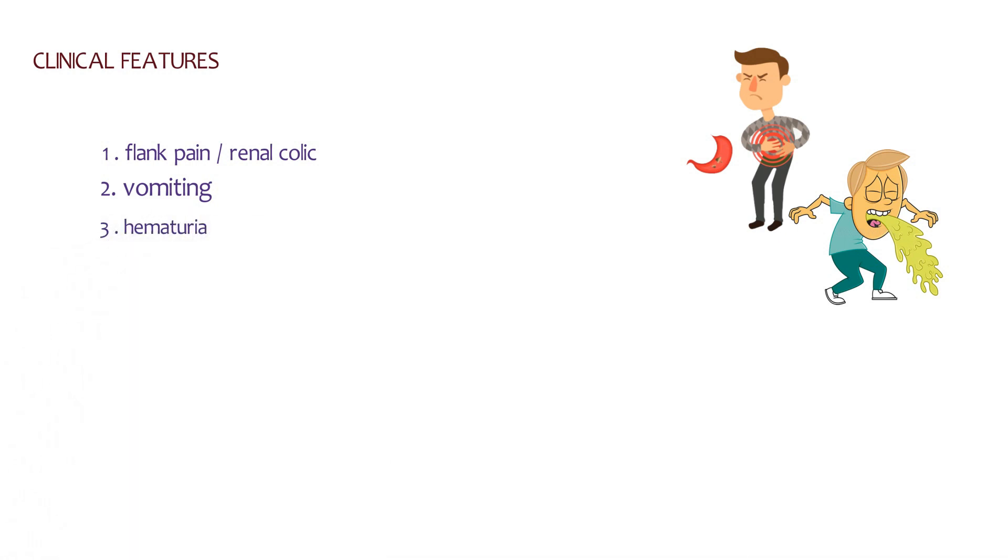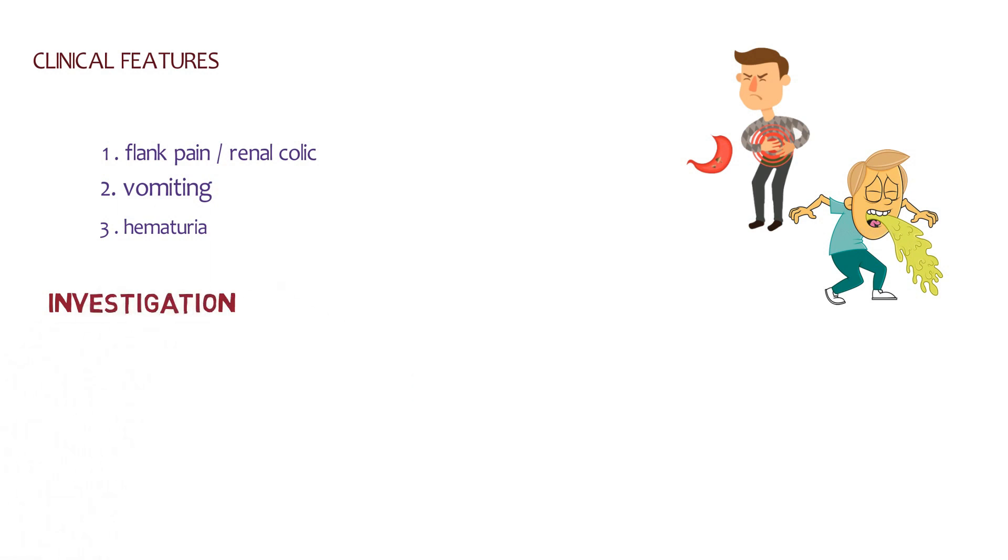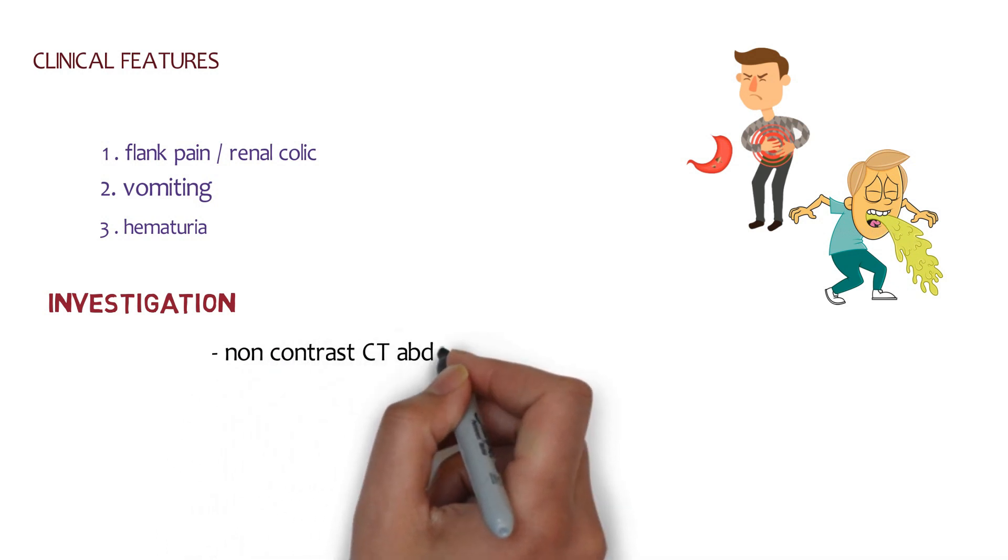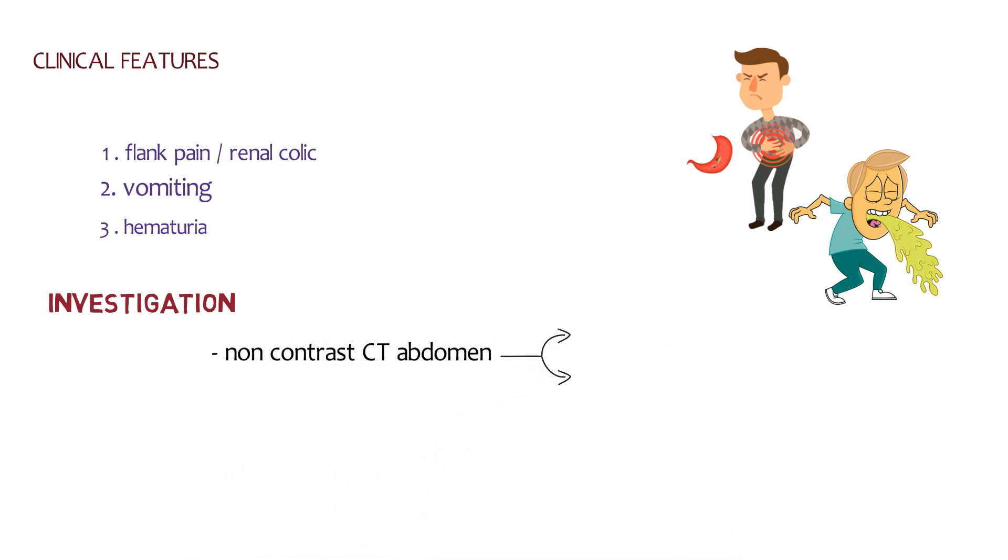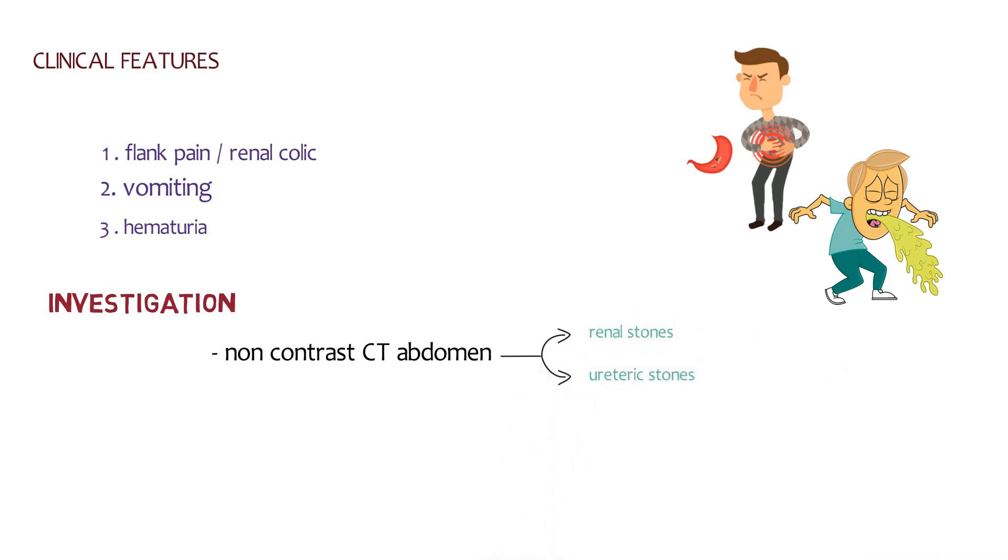What do you think about investigations? You might be thinking of ultrasound, but the best investigation of choice is non-contrast CT abdomen for both renal stones and ureteric stones. We can do kidney function tests and urine microscopic examination to identify the shape of these crystals.